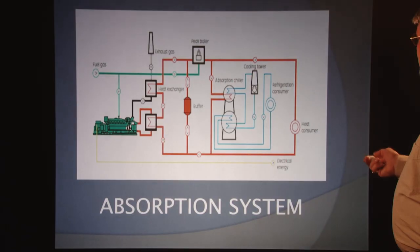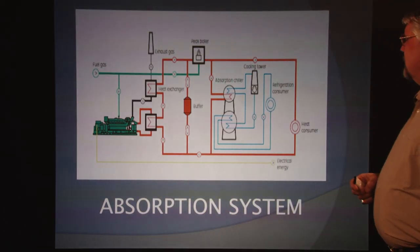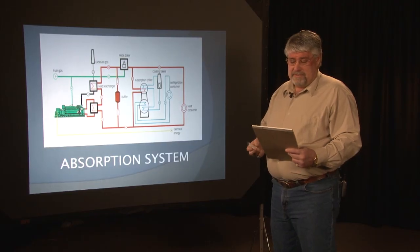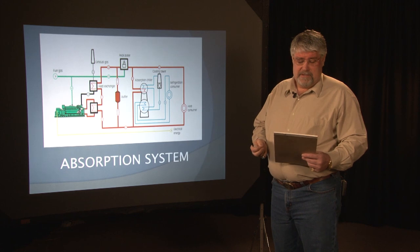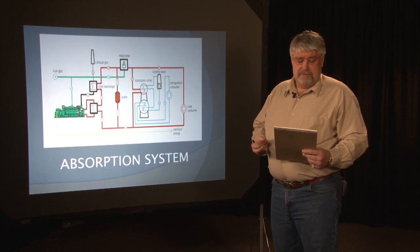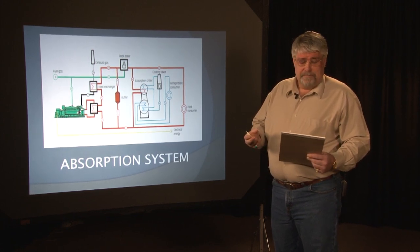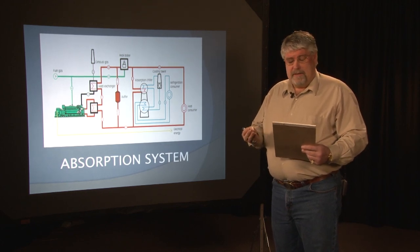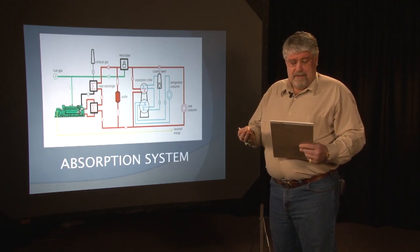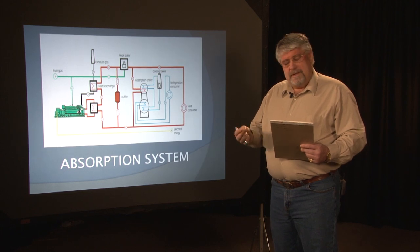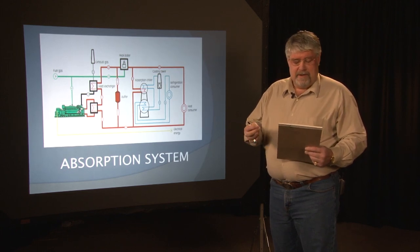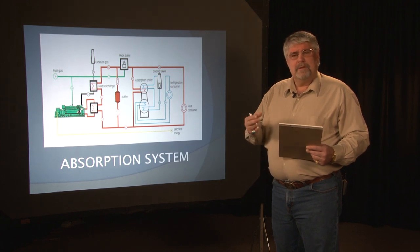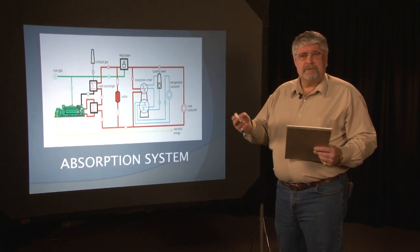Number one, we're going to talk about an absorption system. An absorption system is a refrigerating system in which refrigerant is pressurized by pumping a chemical solution of refrigerant in absorbent, and then separated by an addition of heat in a generator, then condensed, expanded, evaporated, and absorbed, reabsorbed into the absorption, and then this cycle repeats.